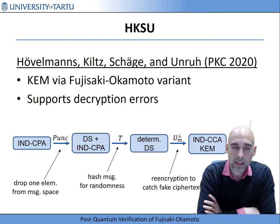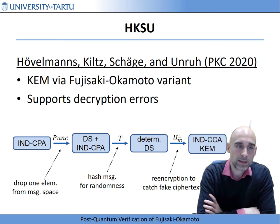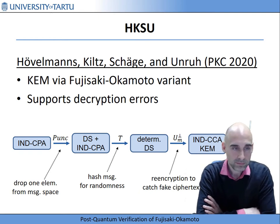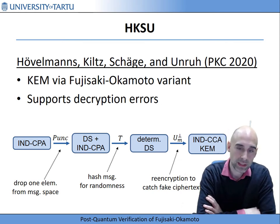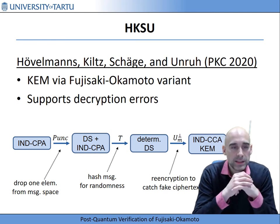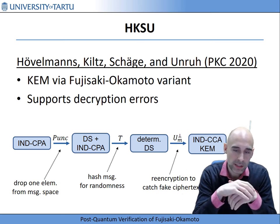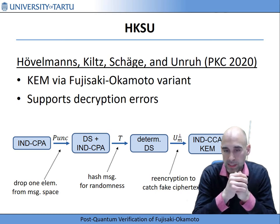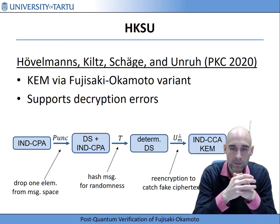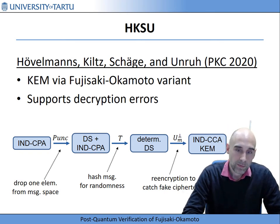The security proof we analyzed and formalized is based on a result by Hövelmann, Kils, Schäger, and Unruh from PKC 2020. They showed the security of a key encapsulation mechanism using a variant of the Fujisaki-Okamoto transform. One crucial aspect is that their proof also works in the case of decryption errors, which is very important for lattice-based encryption because lattice-based encryption usually has a negligible probability of failures when decrypting. Even a negligible failure probability can and did break some prior security proofs in the post-quantum setting.